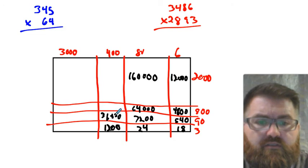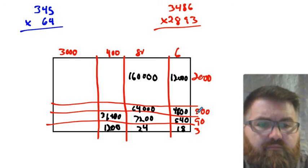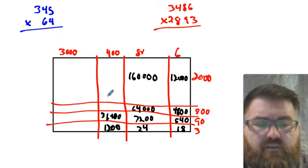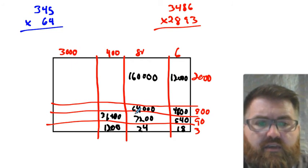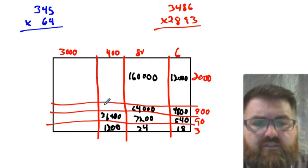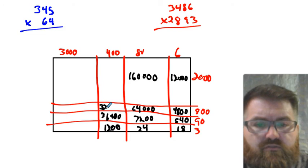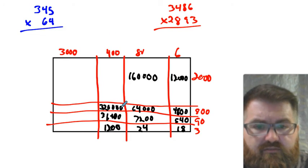Does not look great. 400 times 800 — that's going to be 100s times 100s, that's 10,000s. 4 times 8 is 32, so that's 32 ten-thousands, which is 320,000.